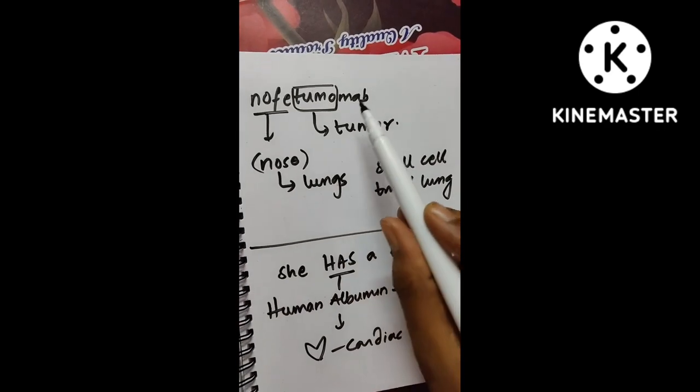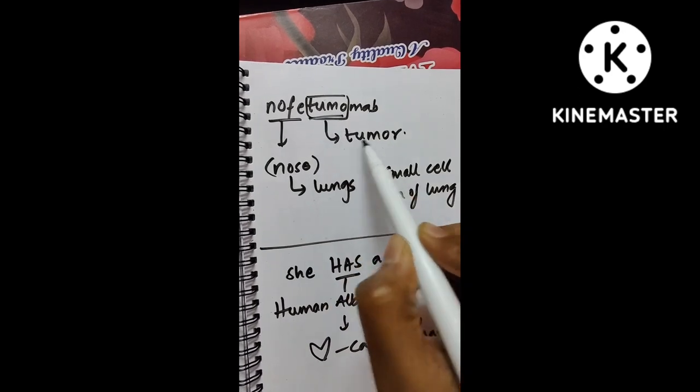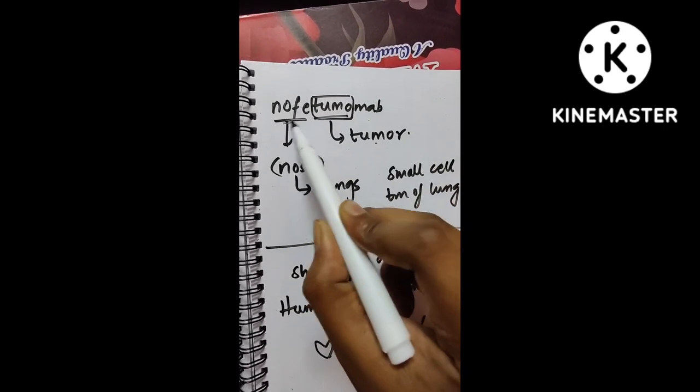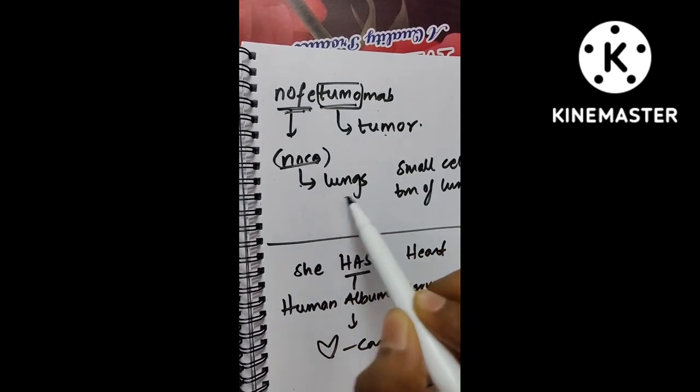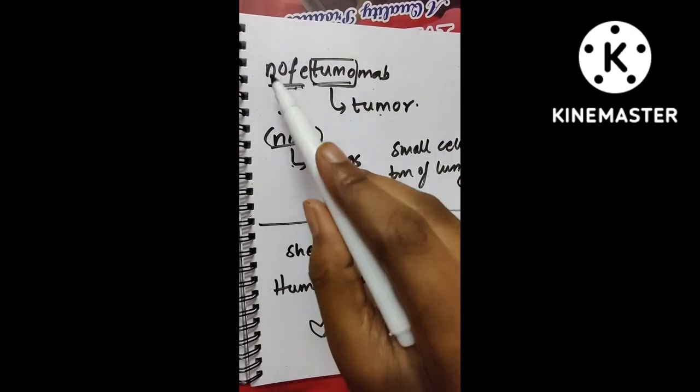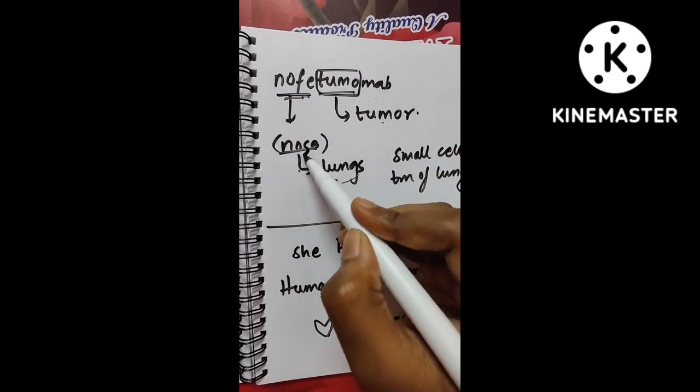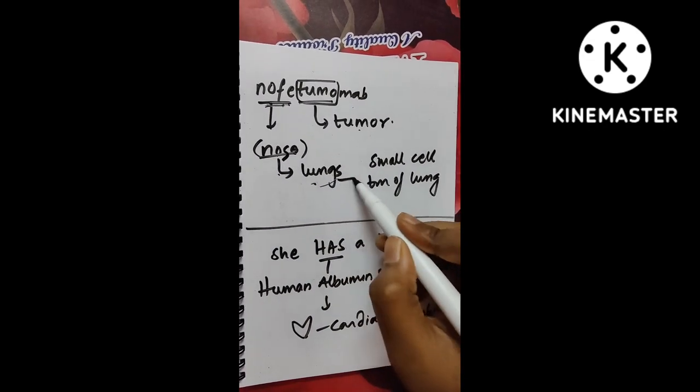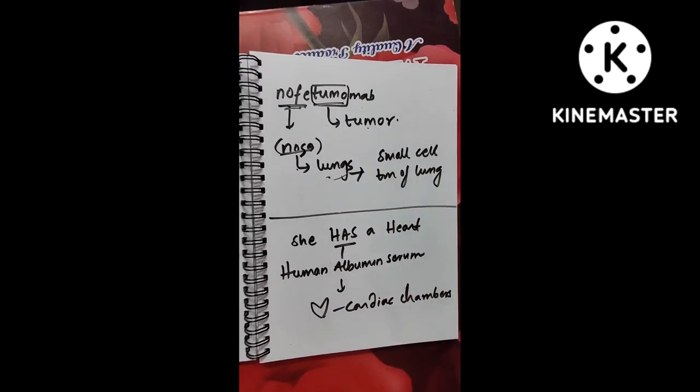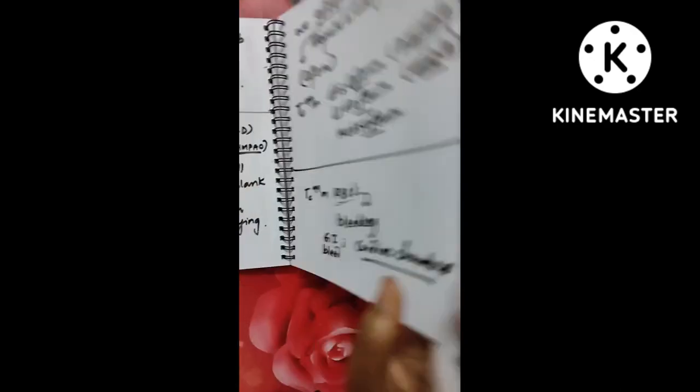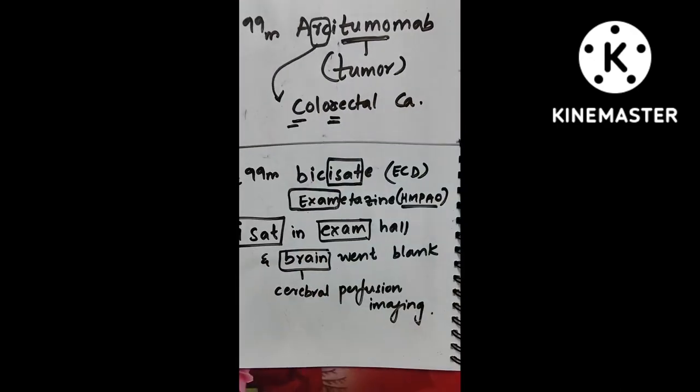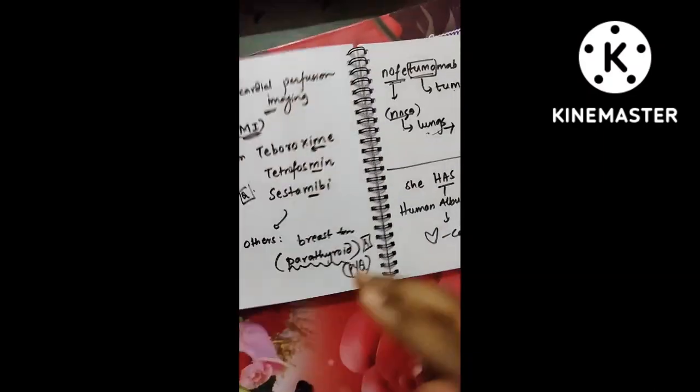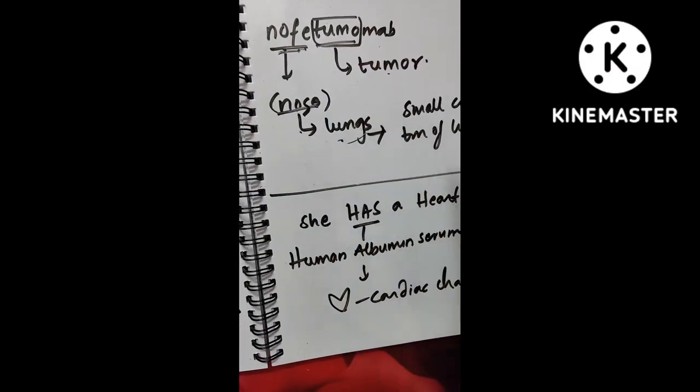Now comes another one, nofitumumab. So here also tumor is tumor for monoclonal antibody and NOF. Remember it as nose, okay? Through nose, you breathe and that goes into lungs, right? So NOF is nose and breathing lungs. So for lungs, that is small cell tumor of the lung. Remember it like that. Don't confuse it with this tumor. This tumor is clearly RC, that is colorectal. This tumor is for NOF. NOF is nose, nose is lungs, okay?